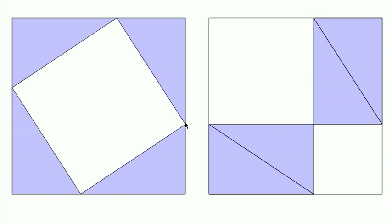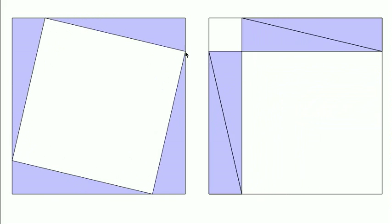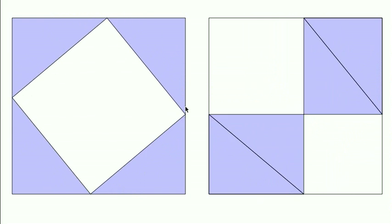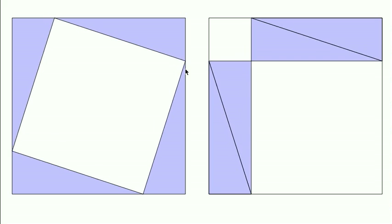And what I've done is I've enabled an animation here, so I can slide the length of the sides of the triangles. And you can see how these four blue triangles can fit together into these two rectangles.